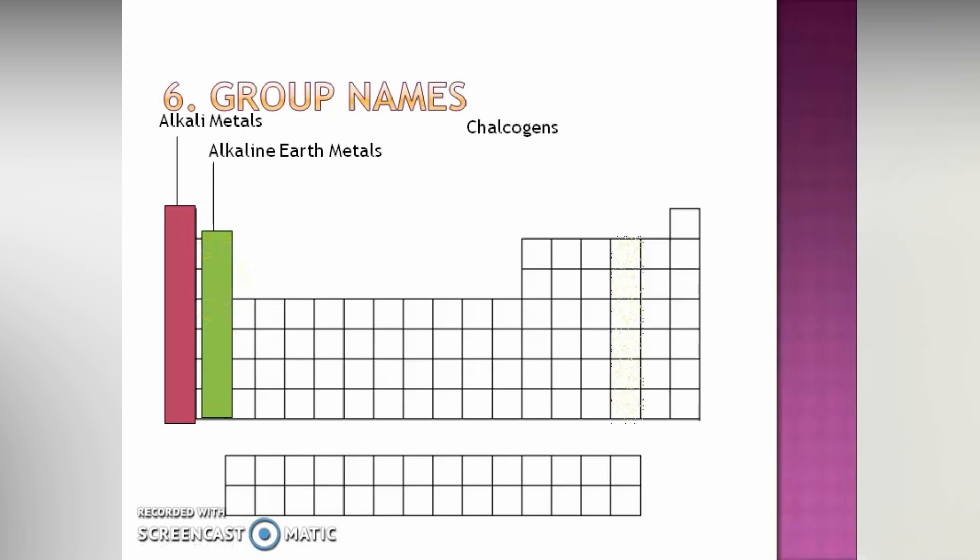Then, we have the halogens which are the group 7. But, before that we have the boron family which are the group 3 elements. The carbon family which are the group 4 elements. The nitrogen family which are the group 5 elements. The oxygen family which are the group 6 and are called the chalcogens.